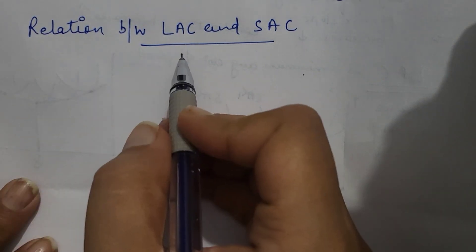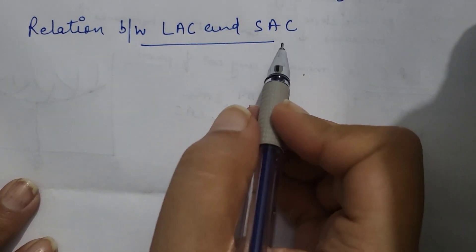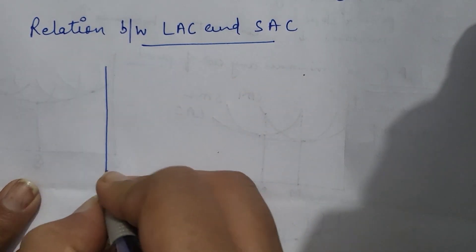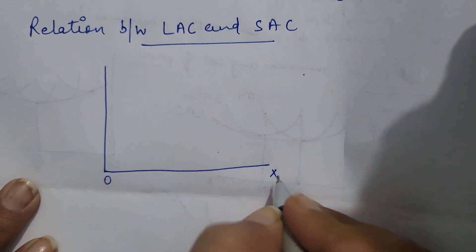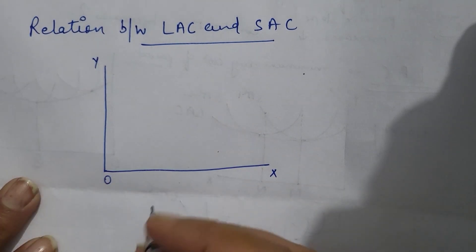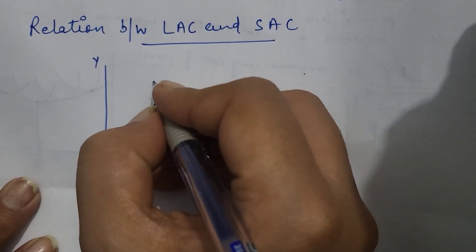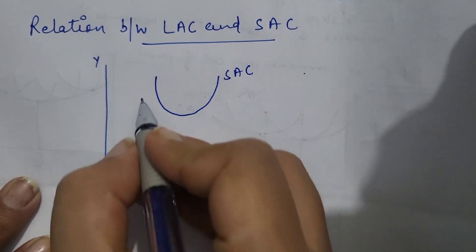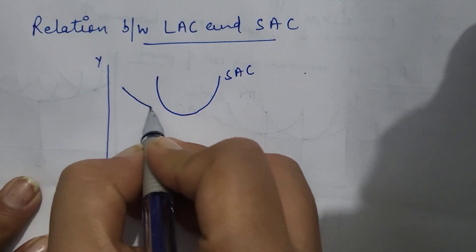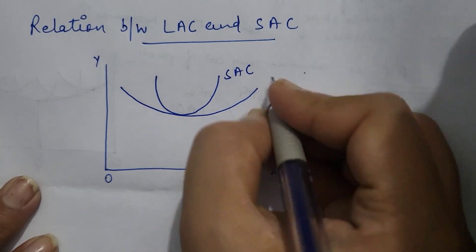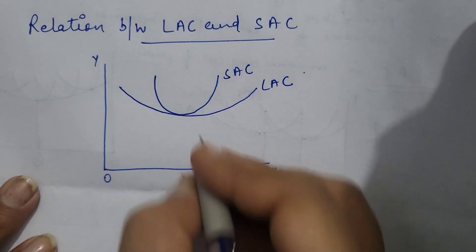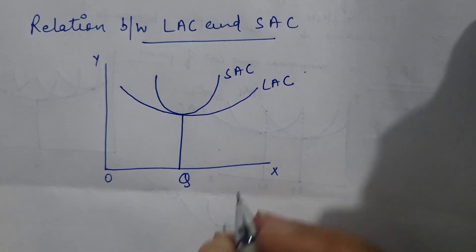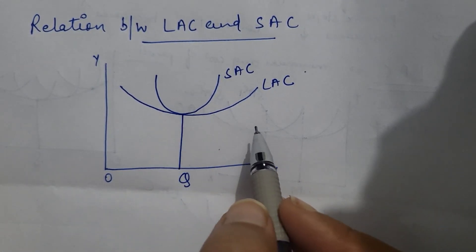Our topic is the relation between long run average cost and short run average cost. Both the long run average cost curve and short run average cost curve are U-shaped. The short run average cost curve is more pronounced, whereas the long run cost curve is relatively flat. So what is the relation between all these curves?